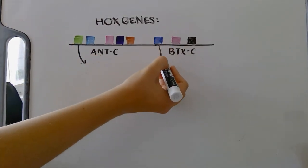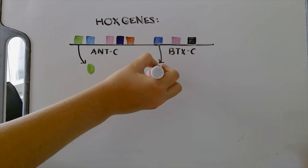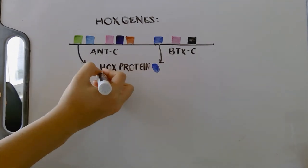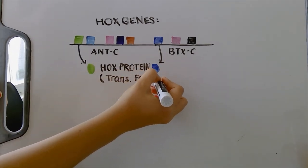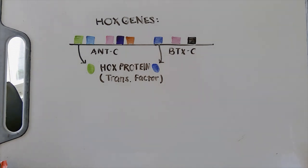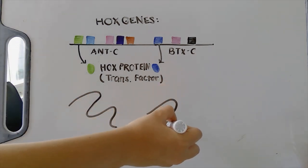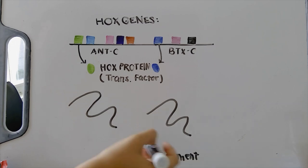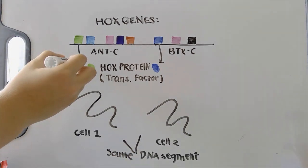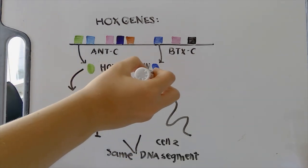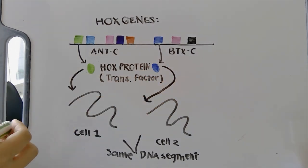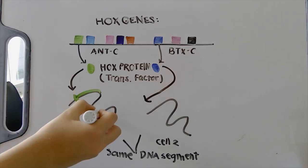The Hox genes themselves code for a specific set of Hox proteins, which act as transcription factors. Transcription factors can help to determine the expression of other genes within the genome by binding to different places in the DNA to initiate the transcription process. What we see here is two copies of the exact same area in the genome — the exact same portion of DNA — that come from two different cells. What determines what part of that genome is actually transcribed, and will go on to become the protein that causes a signal cascade and eventually constructs an entire body segment, is the binding of the Hox proteins — those transcription factors — onto the DNA at the different locations they're specified for.